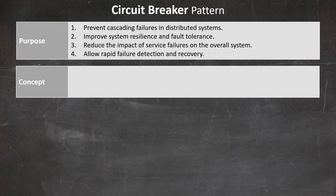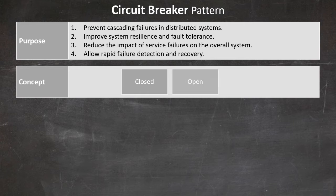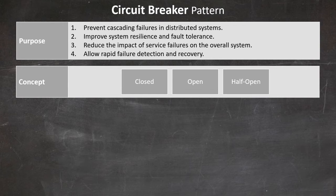Instead of being a two-state circuit breaker, it has three states. Closed, which is normal operation — requests pass through. Open, when a failure is detected — requests are immediately rejected. And half-open, when we test if the service has recovered from a previous failure. To simplify: when a service fails repeatedly, the circuit breaker trips to the open state, preventing further requests. After a defined timeout, it switches to half-open to test if the service has recovered.